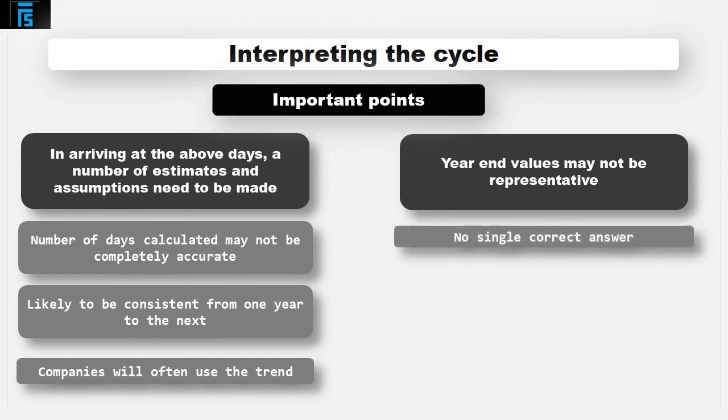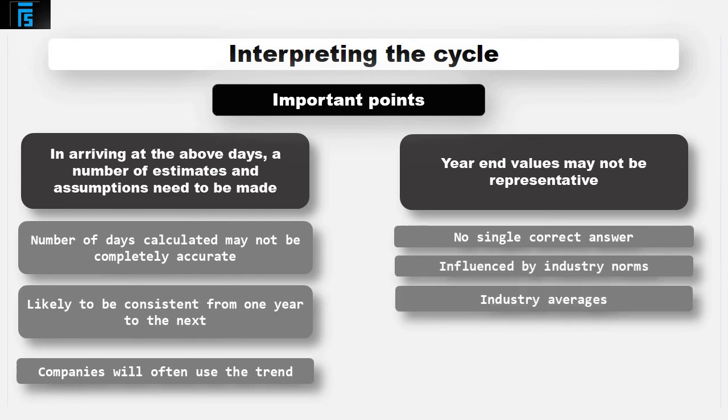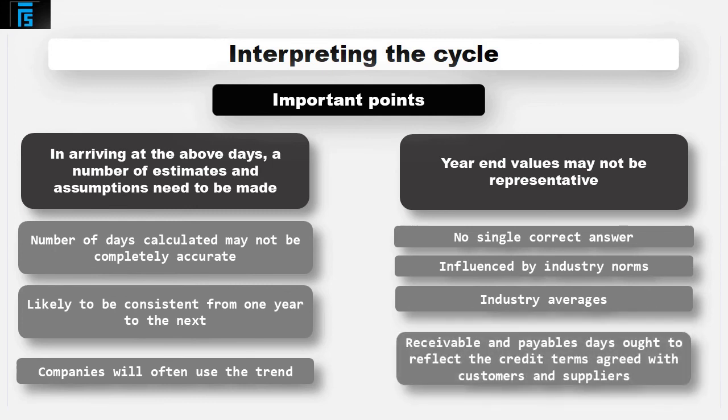There is no single correct answer as to what the various days should equate to. However, they are likely to be influenced by industry norms. Consequently, companies will often use industry averages, or data from similar companies in the industry, to gauge the appropriateness of the levels. More specifically, receivable and payable days ought to reflect the credit terms agreed with customers and suppliers respectively. Where this is not the case, tighter management controls may be required, and management of receivables and payables will be covered in more detail in a separate presentation.